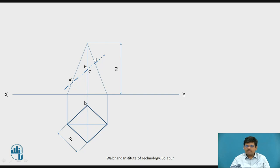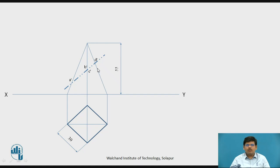Here we have two edges — one coming from this side and one from that side. Then again at this point we have only one edge. So points a, b, c, and d — or a dash, b dash, and c dash — are the points where the cutting plane cuts the solid.